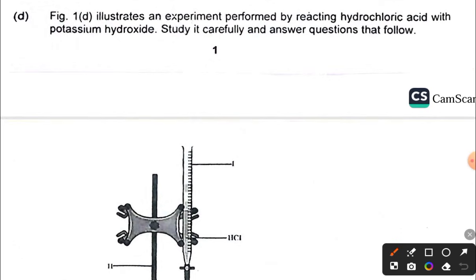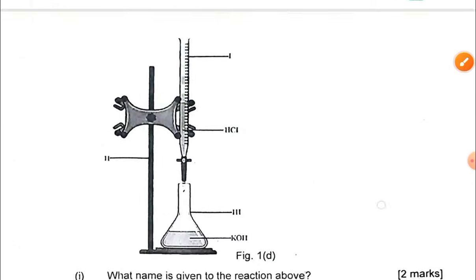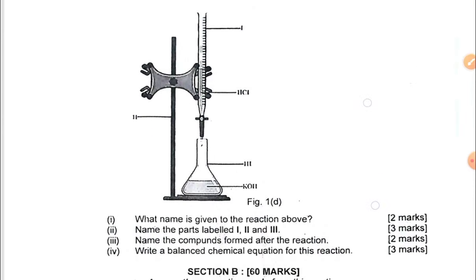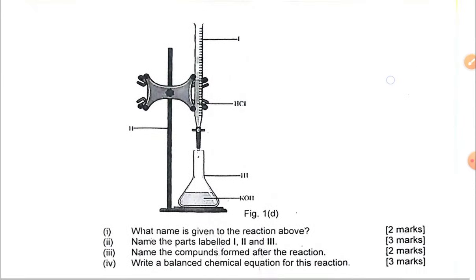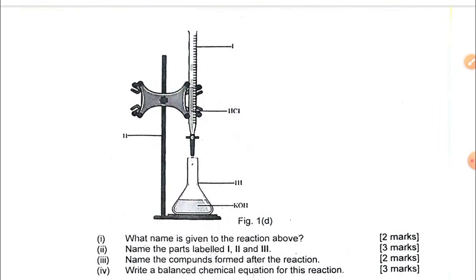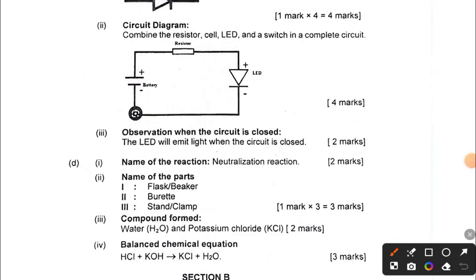For question 1d, there is an experiment where HCl (hydrochloric acid) reacts with potassium hydroxide. We are asked to give the name of the reaction, label parts I to III, identify the compounds formed after the reaction, and write a balanced equation.